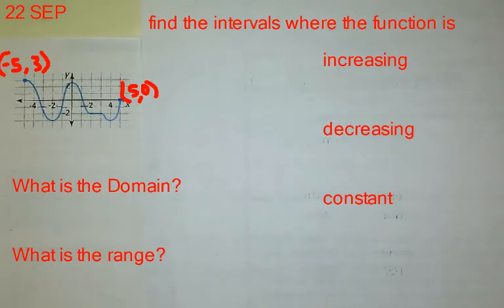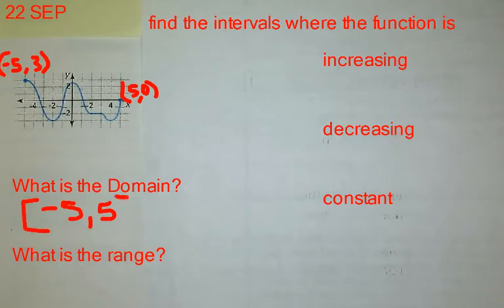If I'm working on this graph right here, it has endpoints. The domain is how wide the graph is. Well, it starts at negative 5, and then it does all these little swoops and curves, and it stops at positive 5. So if I'm writing the interval, I'm writing from negative 5 to positive 5. Now, do I use brackets or parentheses? Since it has an endpoint, I can get all the way there, that is a bracket.